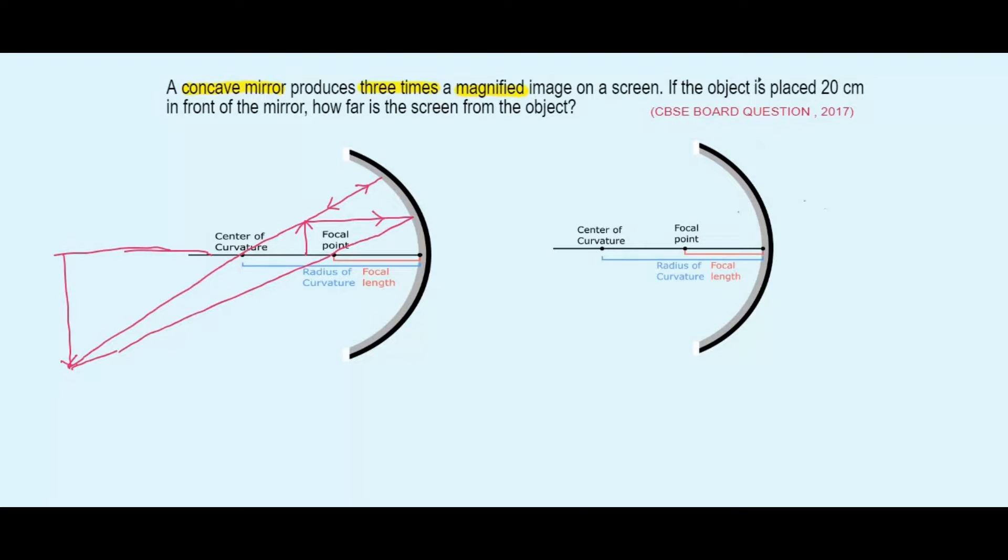Another case is when the object is placed between the focus and the pole. So here one ray goes parallel. After reflection, it will pass through the focus. Another ray will pass through the pole. It will be directed towards the pole and reflect back with the incident ray and the reflected ray obeying the laws of reflection. The angle of incidence will equal the angle of reflection. Now these two rays will be meeting behind the mirror when they are reproduced backwards. So here is our image which is formed. These are the two cases when the concave mirror produces a magnified image.